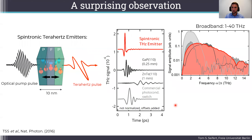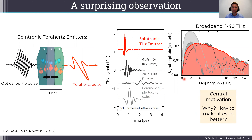Even better, when you take the Fourier transformation of these time traces, you find that this spintronic terahertz emission covers a very broad frequency range. Basically, it covers the entire terahertz window from 1 to 40 terahertz without any gaps. And in my talk today, the central motivation is: why does that work? How does it work? And once we understood it, how can we make it even better? But let's go step by step.